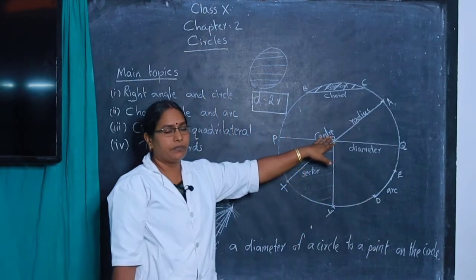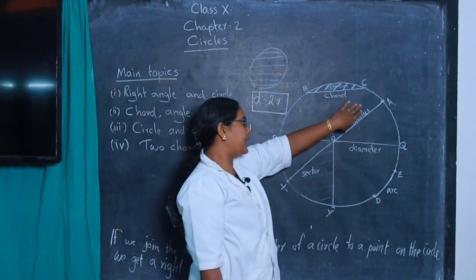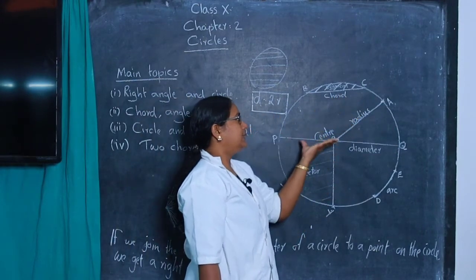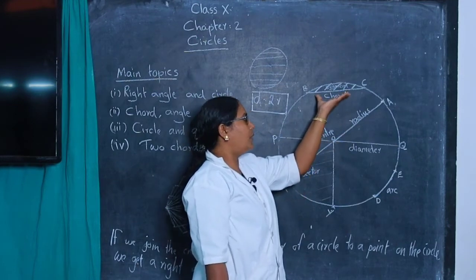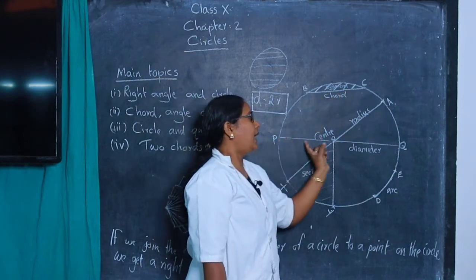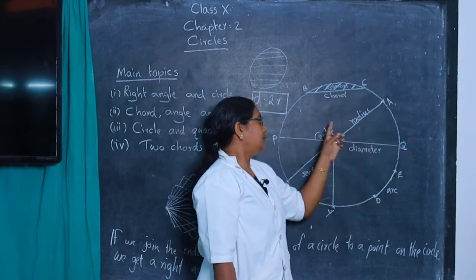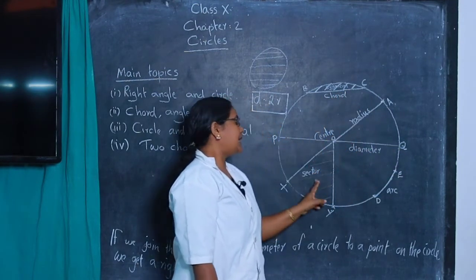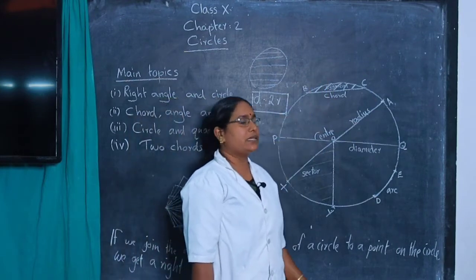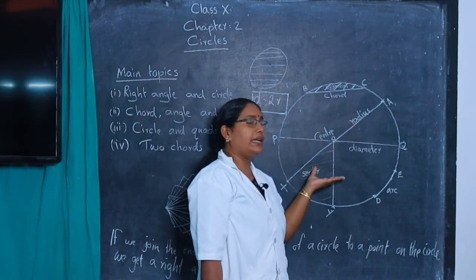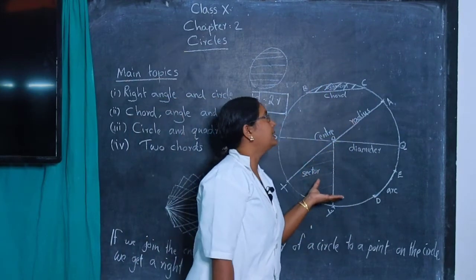The important parts of a circle are: center, radius, diameter, chord, sector, and segment. You have already studied these in 9th standard.